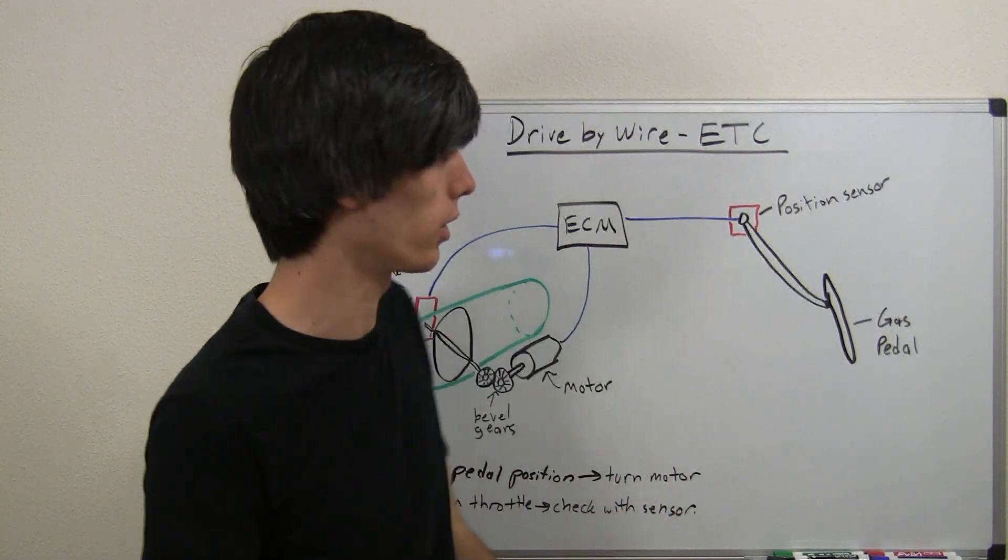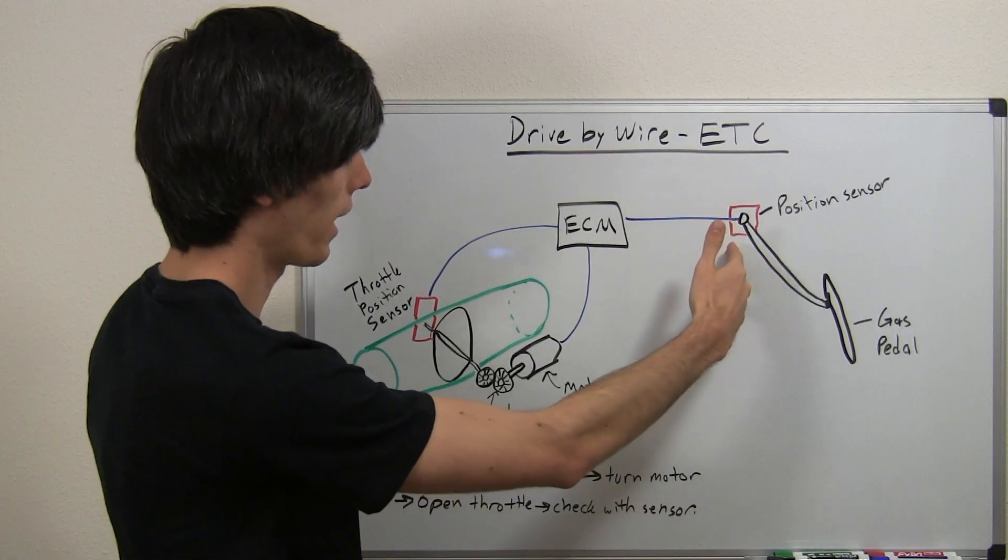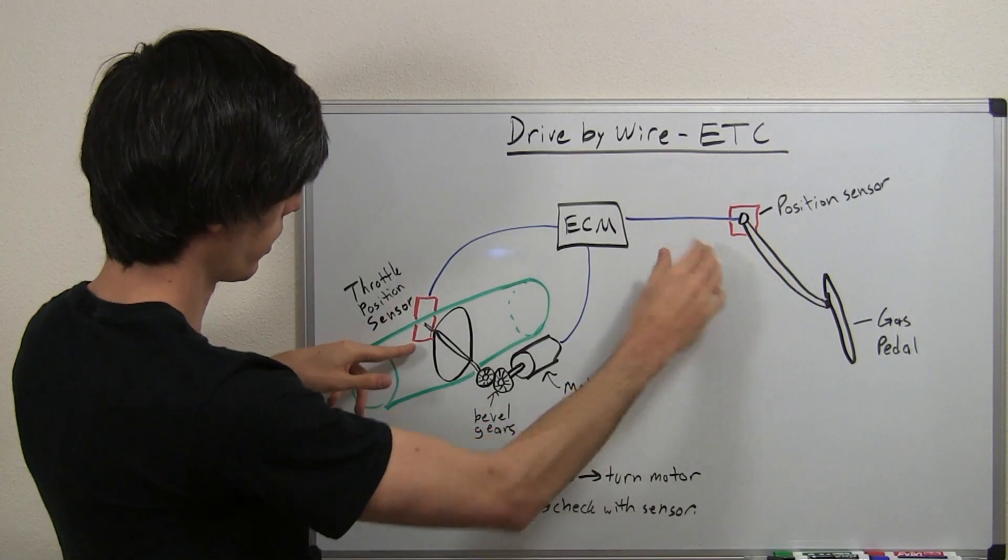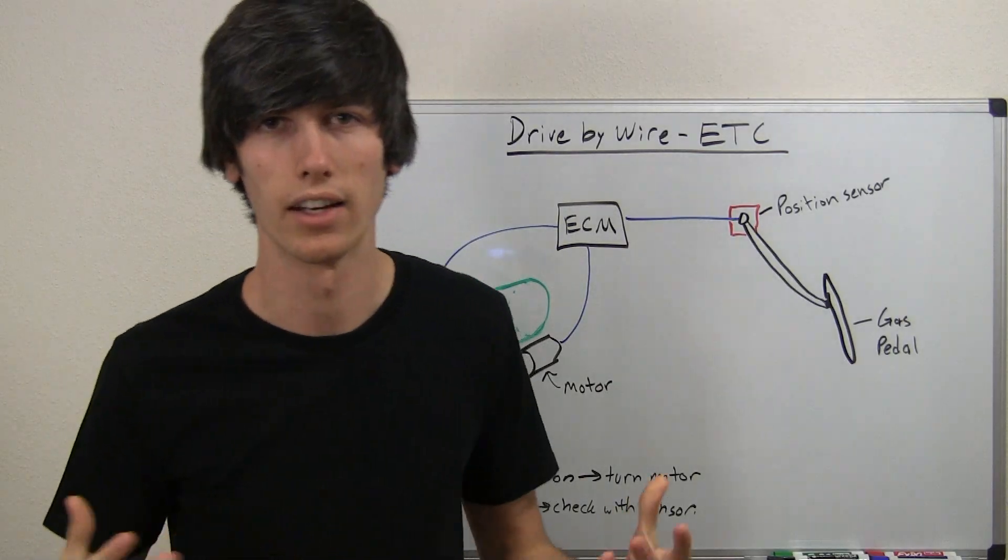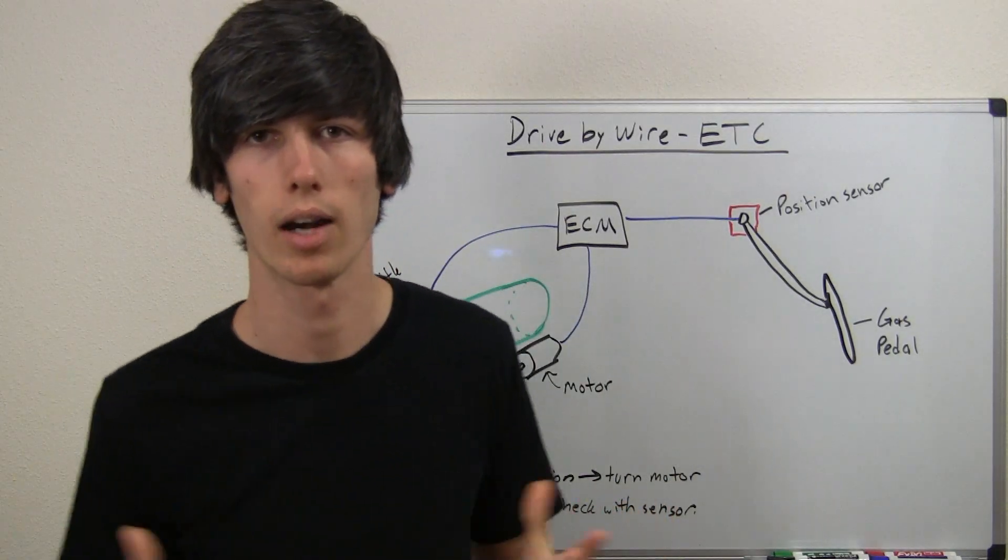With electronics, you can have problems where, say the sensor goes bad, it can check and know that, well hey, the throttle position isn't where it's supposed to be, and then your check engine light will come on, you know you've got a problem.